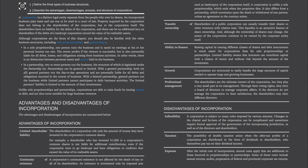Transfer of ownership — shareholders of a public corporation can usually transfer their shares to other investors with relative ease. This liquidity is an attractive feature of share ownership, and although the ownership of shares may change, the assets of the corporation continue to be owned by the corporate entity itself. Ability to finance — raising capital by issuing different classes of shares and debt instruments is much easier for corporations than for sole proprietorships or partnerships. Limited liability means that investors can contribute capital with a chance of return and without risk beyond the amount of investment. Growth — corporations are structured to easily handle the large amounts of capital needed to operate large and growing businesses.